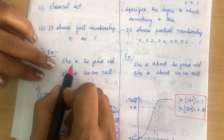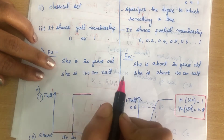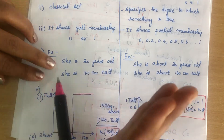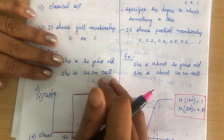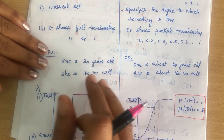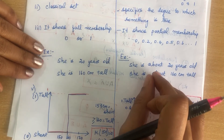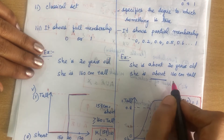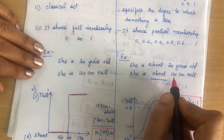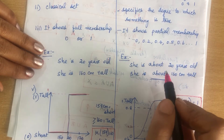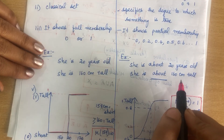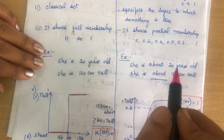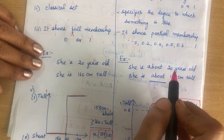For example, for a crisp set: if you ask a girl's age from her parents, they will say clearly she is 20 years old and 160 centimetres tall. This information is crisp and precise — we can easily come to a conclusion. But if you ask someone else, they might say she is about 20 years old, about 160 centimetres tall. They are not sure — the information is imprecise. This imprecise information is what fuzzy logic handles.